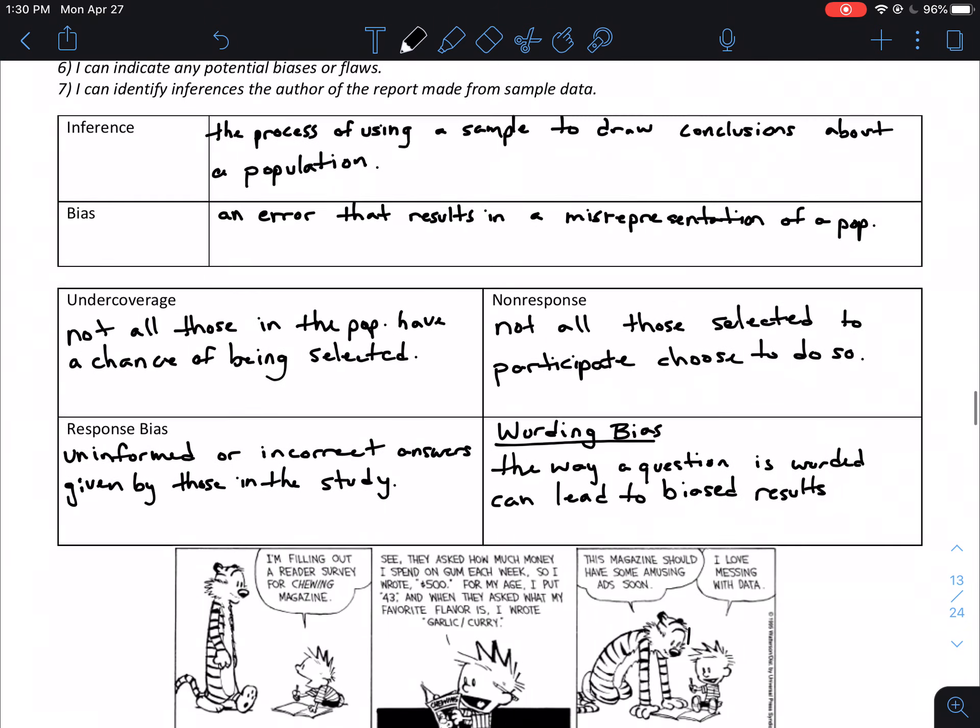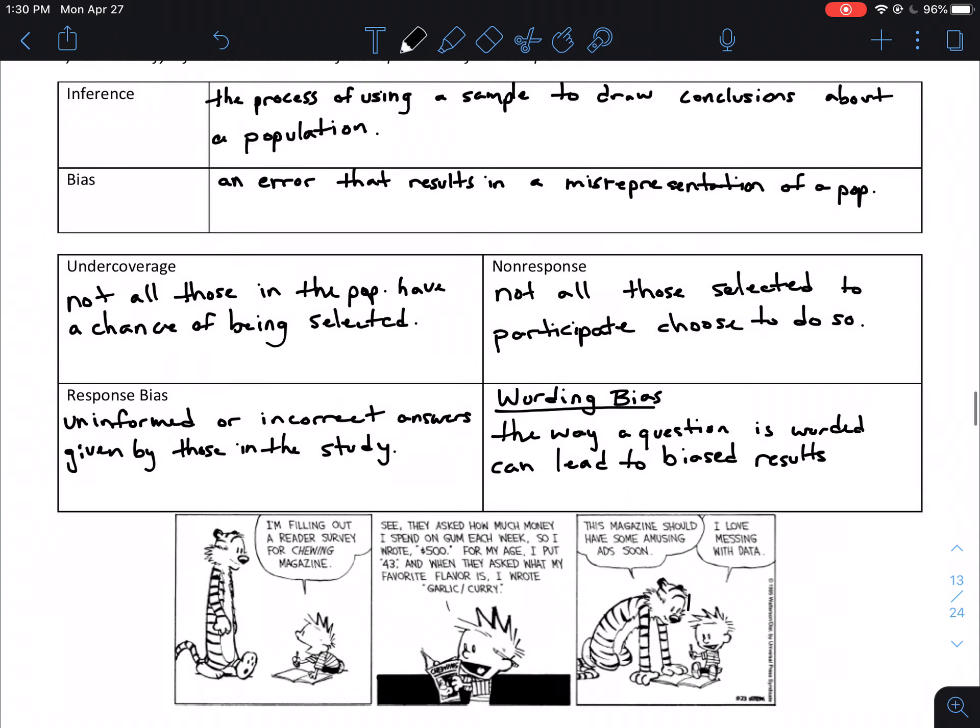So starting off with a couple definitions, the first thing is inference. We've kind of talked about inference, but in a roundabout way. Inference is the process of using a sample to draw conclusions about a population. So inference is kind of a key to statistics. It's important. That's kind of what makes statistics what it is. Without inference, statistics is just collecting data and doing nothing with it.